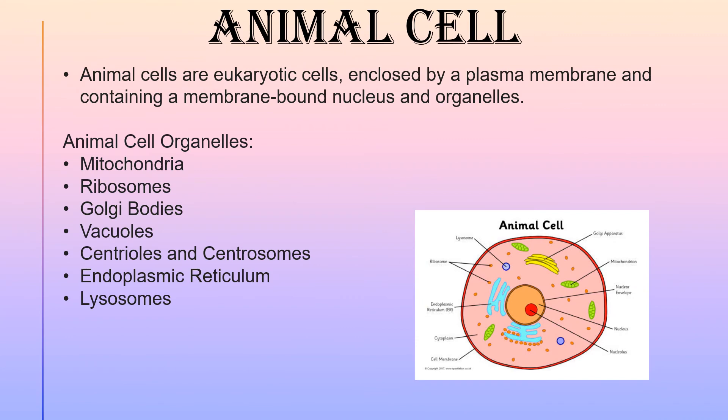Now let's start about the animal cell. Animal cells are eukaryotic cells enclosed by a plasma membrane and containing a membrane-borne nucleus and organelles. Cell organelles are special structures that have a specific role to play.